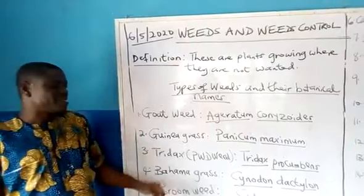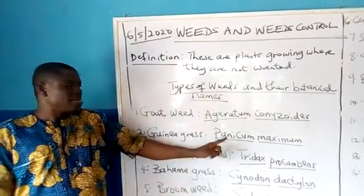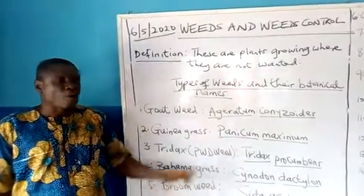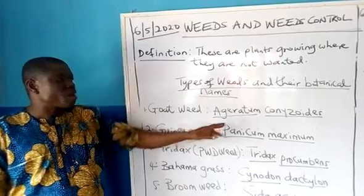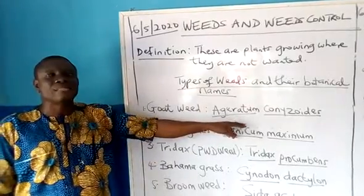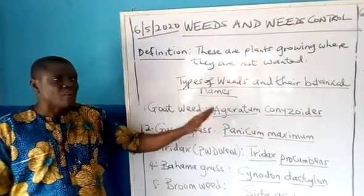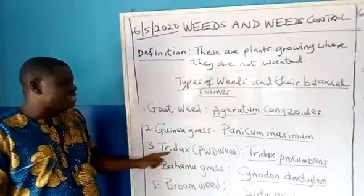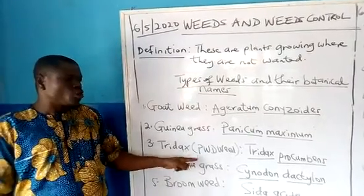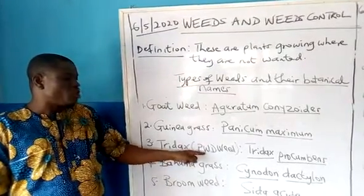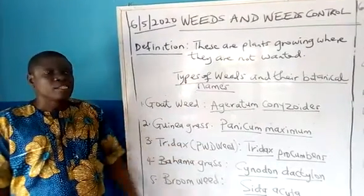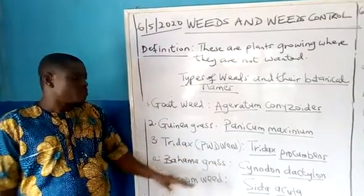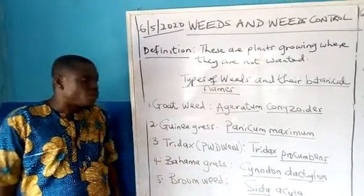We have Guinea grass, which has a botanical name called Panicum maximum. I underline the botanical names — that is the standard way of writing botanical names. We also have Tridax, which is also called P.W.D. weed, mostly seen along the road. Its botanical name is Tridax procumbens.